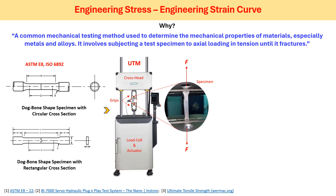Once we fabricate this specimen, we need to load it on the machine that is known as UTM, which stands for universal testing machine. There are three different components of this machine. The first one, as indicated in the image, is the cross head. The second component is grips, and the third and very important component is known as the load cell and actuator.